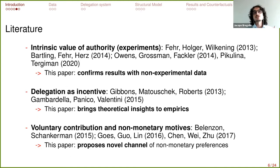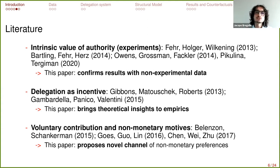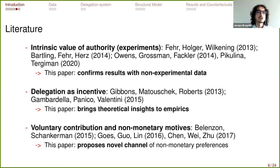The literature this paper touches on is threefold. First, the intrinsic value of authority literature, which studies experimentally how people may value control over decision-making — and here I confirm those experimental results using non-experimental data. Second, I contribute to the organizational economics literature by bringing to the empirics the theory studying how delegation can be used as an incentive device. Finally, I contribute to the information systems literature on non-monetary motives for user participation in online communities, proposing this novel channel of incentivizing participation.